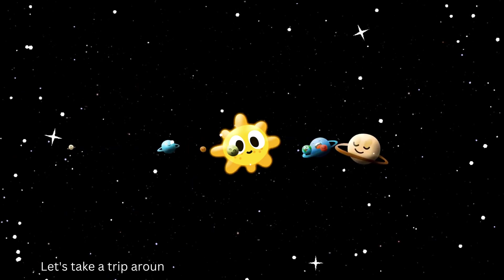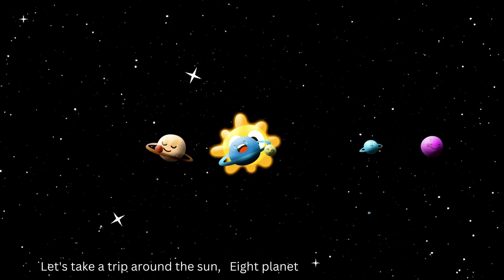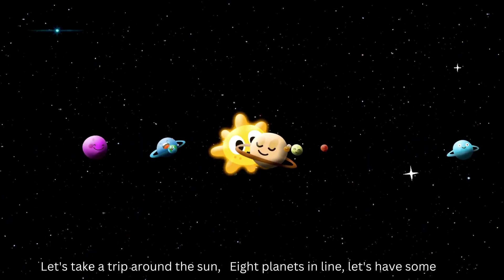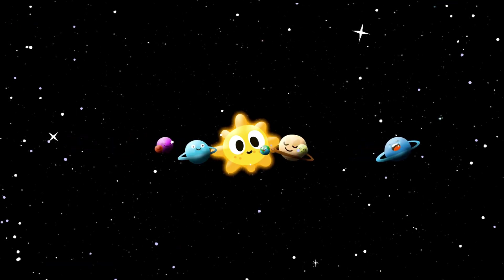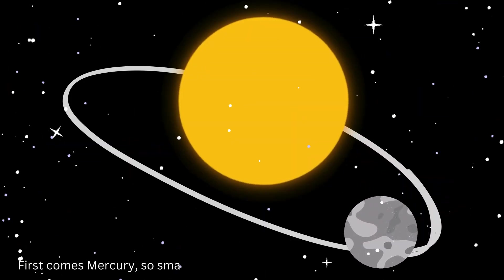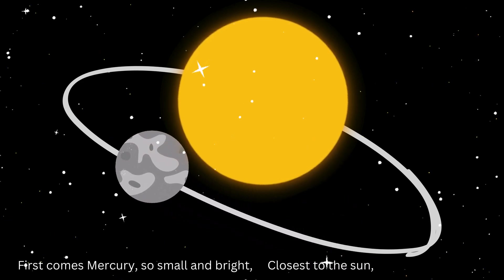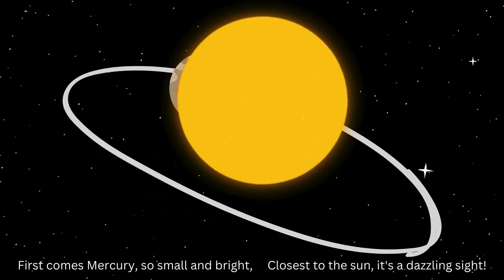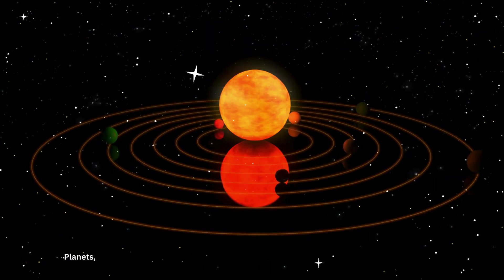Let's take a trip around the sun. Eight planets in line, let's have some fun. First comes Mercury, so small and bright. Closest to the sun, it's a dazzling sight. Planets,